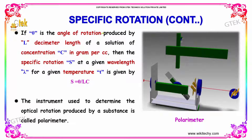If theta is the angle of rotation produced by L decimeter length of a solution of concentration C in gram per cc, then the specific rotation S at a given wavelength lambda for a given temperature T is given by S equal to theta divided by LC.